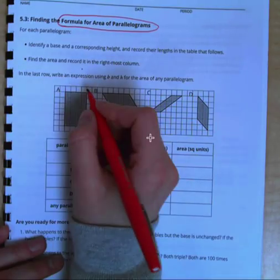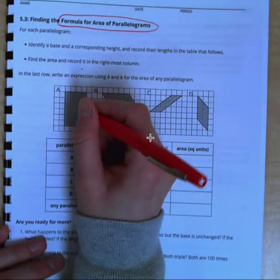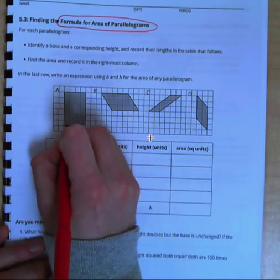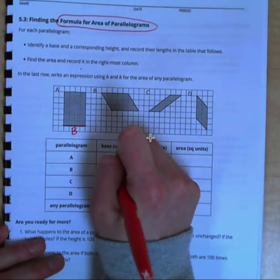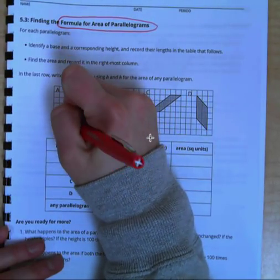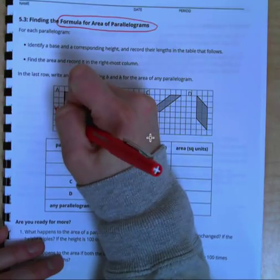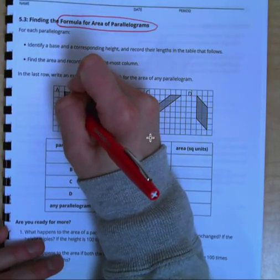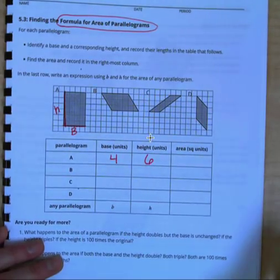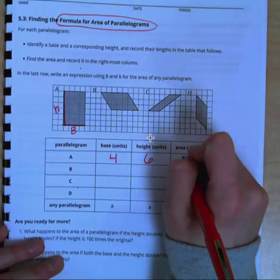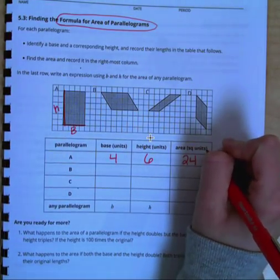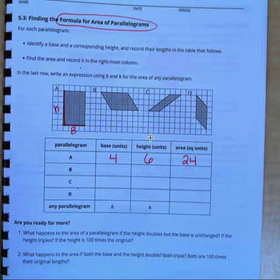So for A, we can find our base and height. This is a rectangle, so our base can be any side. I'm just going to make it the bottom. So it's one, two, three, four units. And our height, we're going to make it a 90-degree angle. One, two, three, four, five, six. So the area of our parallelogram, four times six is 24. And they already have square units up in the table for us, so we don't have to rewrite that every time.